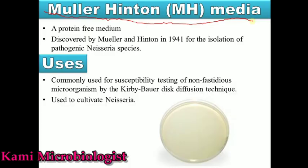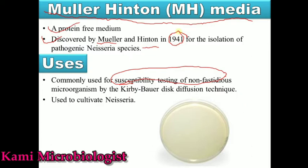Mueller Hinton media is actually the type of culture media which is specially used for antibiotic susceptibility profiling. It is a protein-free medium, meaning that if we see the composition of this media, protein is not present. Moreover, this media was discovered by two scientists named Mueller and Hinton in 1941, and they used this media for the isolation of Neisseria species.